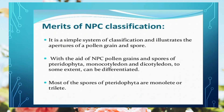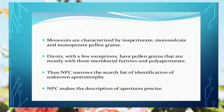This is the classification based on character. Now let's discuss the merits of NPC classification. First, it is a simple classification system in which apertures are well illustrated. With NPC, we can to some extent differentiate between Pteridophyta, Monocotyledons, and Dicotyledons. The characteristic features of Pteridophyta pollen grains show that they are monolete — having a single mark — or trilete in their pollens or spores.